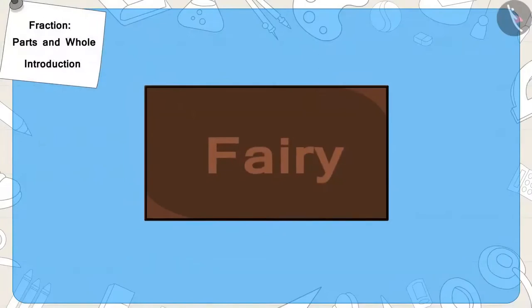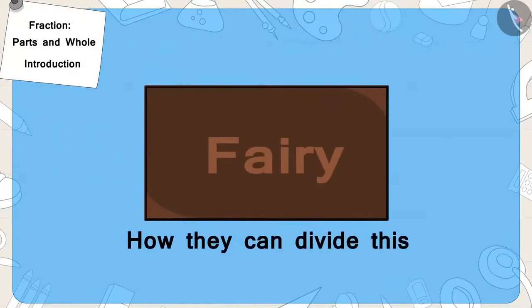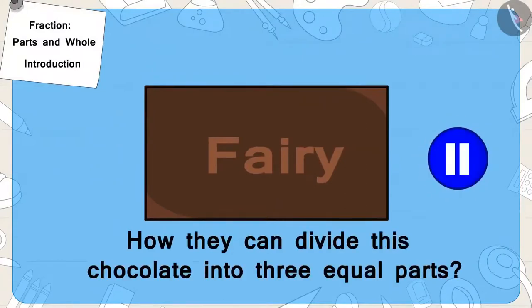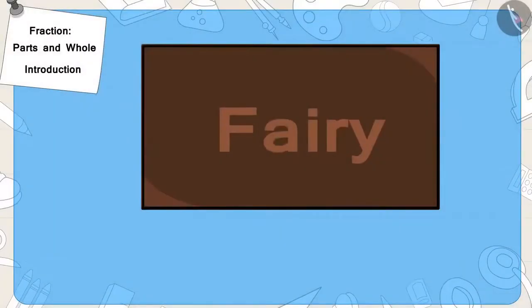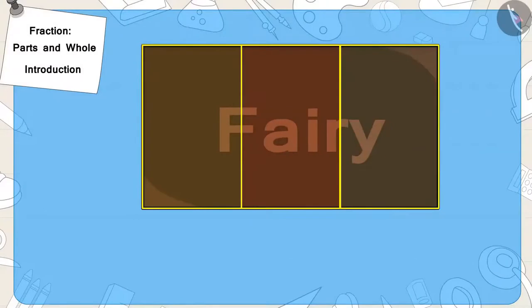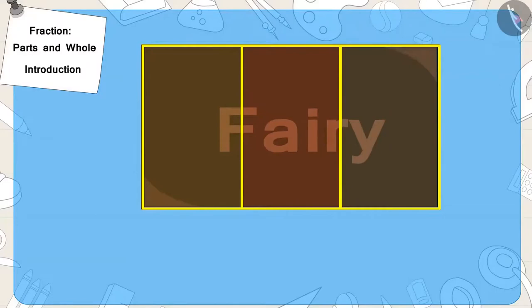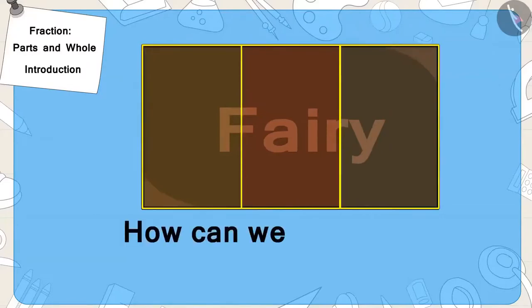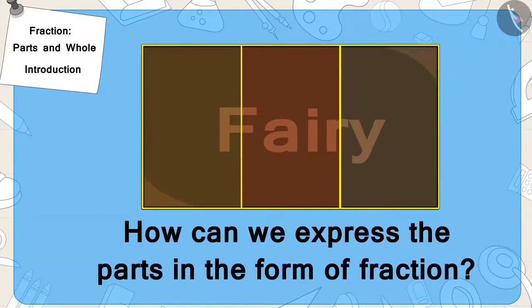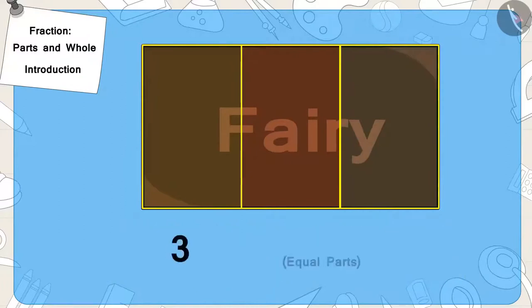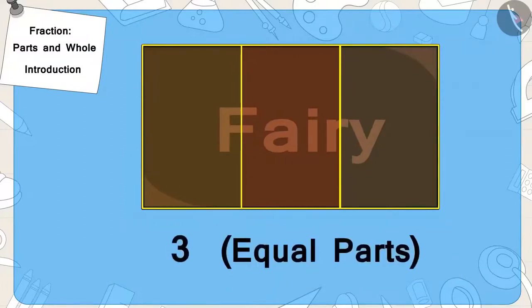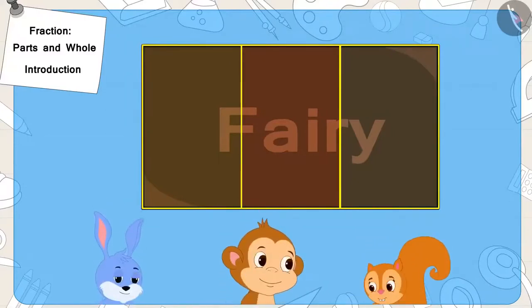Children, can you tell how they can divide this chocolate into three equal parts? If you wish to, you may stop the video and find the answer. Well done, children. You have divided this correctly. Now, can you tell how we can express the parts got by each one of the three as a fraction? There are a total of three equal parts of the chocolate and each one will get one part of it.